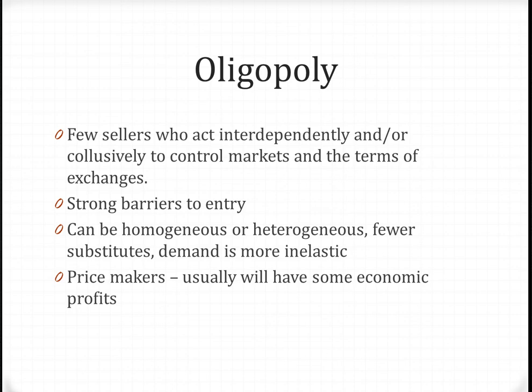The third type of market structure is called an oligopoly. Oligopolies are characterized by a few sellers who act interdependently and or collusively to control the market and the terms of exchange. These sellers are all large and powerful, and because of this, there are strong barriers to entry. It's very difficult for a firm to enter an oligopoly. These firms can either sell the same products or different ones, but either way there are few substitutes, and therefore demand for these products becomes relatively inelastic. A firm in an oligopoly has some price-taking power because of its size and power, so it will often have economic profits. An example of an oligopoly is Airbus and Boeing in the airline markets — they are both huge companies who control the entire market.